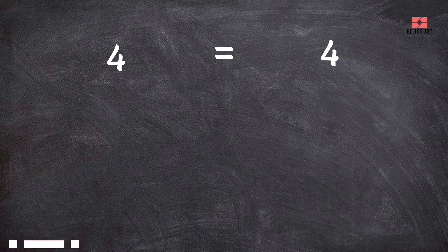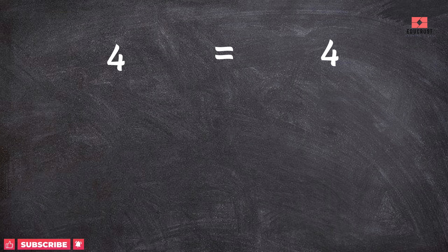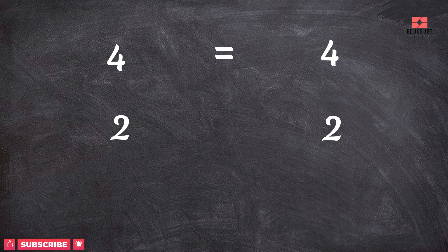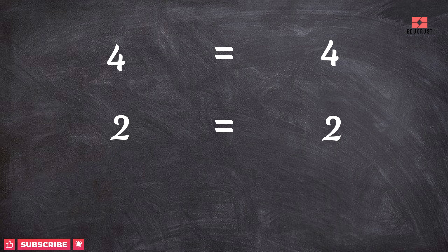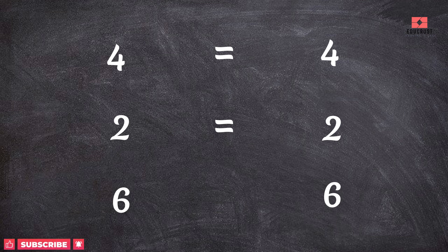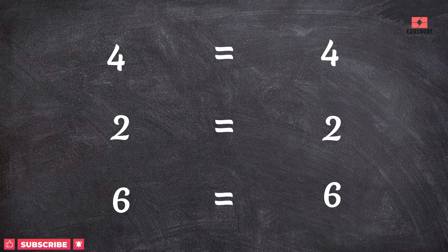Therefore we can say that two is equal to two, and four is equal to four. Next, two and two — both numbers are the same, so the crocodile is confused as to which number to eat and will not open the mouth. Therefore we can say that six is equal to six.